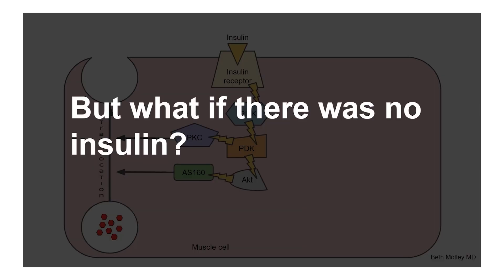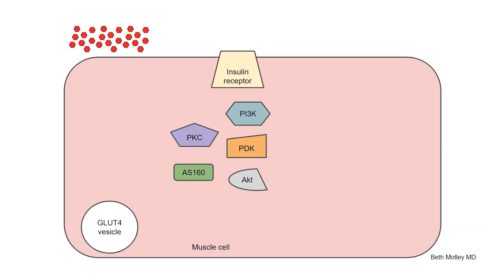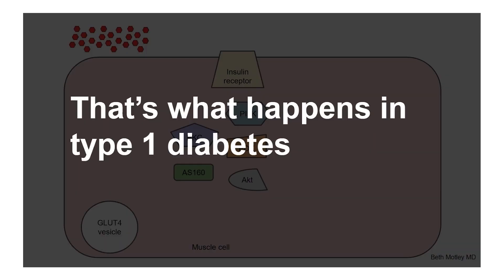But what if there was no insulin? Quite simply, if we don't have the key to unlock the door, sugar is going to build up outside the cell. That's what happens in type 1 diabetes, which is not the case in most people.